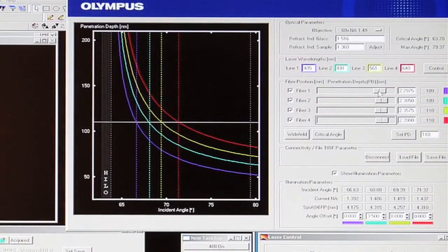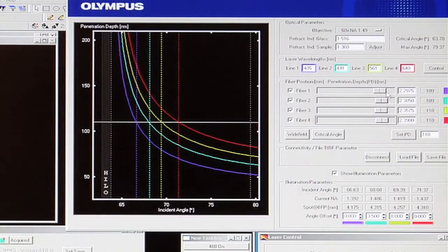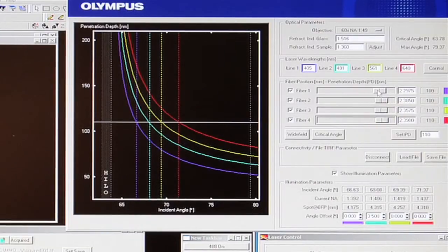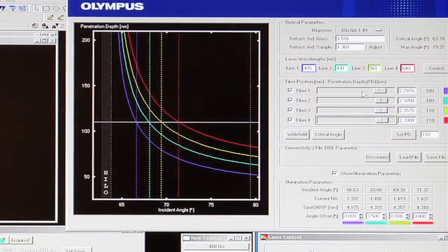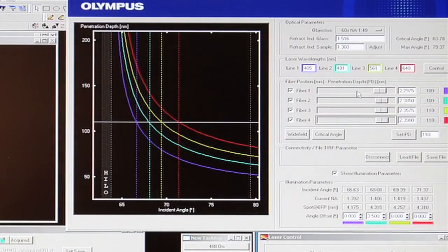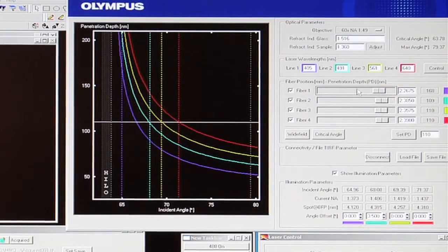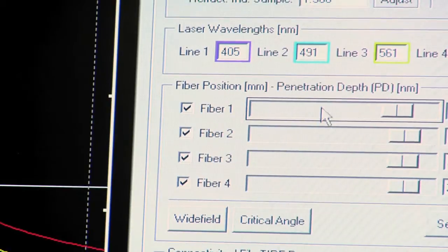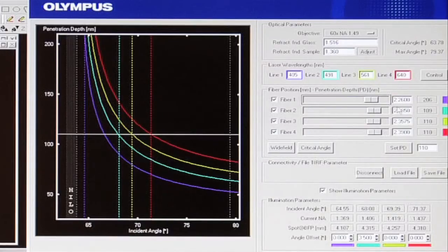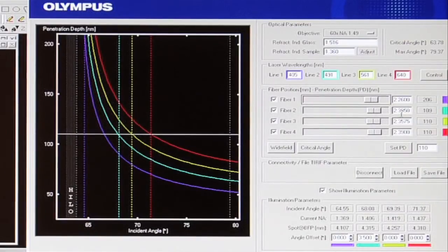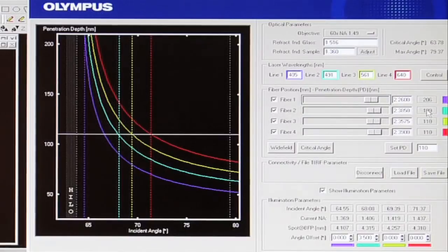Each of the wavelengths is then, each of the fibers is then controlled individually by sliders. On the previous systems, we used the micrometers. Now it's all done with stepper motors via sliders. So we can click and drag in here to adjust, to make small adjustments. We can maybe use the mouse wheel to make faster adjustments. And we're reading out here the position of the optical fiber, which is actually here on the illuminator. And then the calculated penetration depth here, which is what we're interested in for TIRF. So this number here reading out is in nanometers.